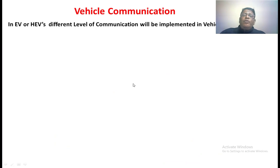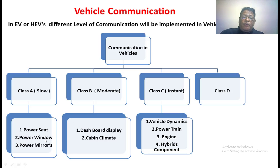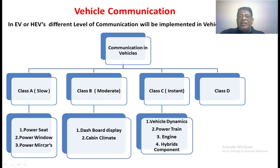Generally there are four types of communication that occur in an electrical vehicle. The first one is Class A communication. Class A communication does not require very high speed. For example, if you want to operate the power seat, power window, or power mirror, even if some delay occurs it does not cause any problem. Such types of components are kept under Class A communication.